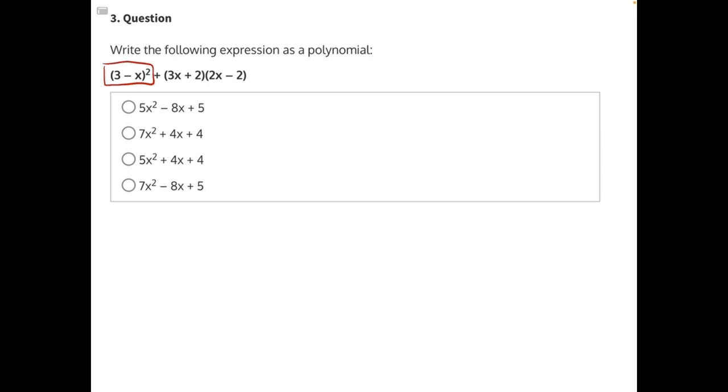Anytime we're squaring a number, we are multiplying it by itself. So this is really 3 minus x times itself, 3 minus x. And now we can see that we're multiplying two binomials together, and we know we need to use the FOIL method in order to factor this out.